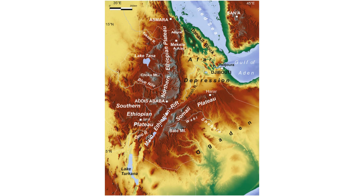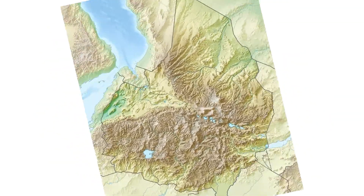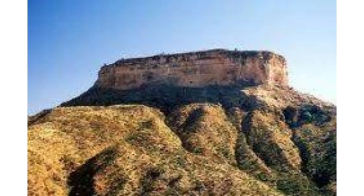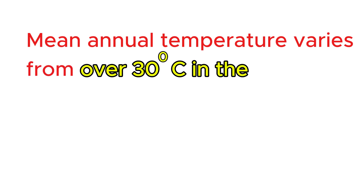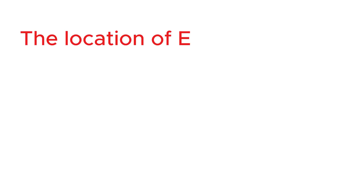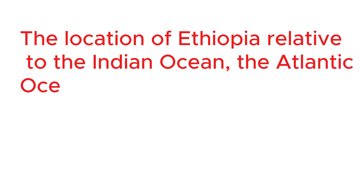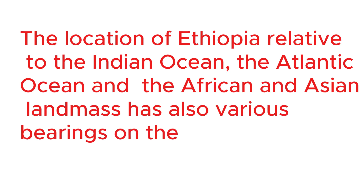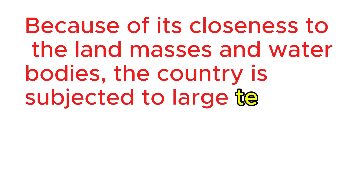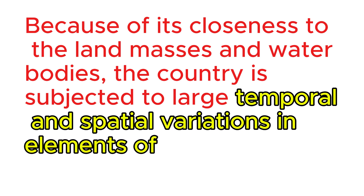Away from the peripheries, the land begins to rise gradually and considerably, culminating in peaks in various parts of the country. Thus, temperature, as affected by altitude, decreases towards the interior highlands. Mean annual temperature varies from over 30 degrees centigrade in the tropical lowlands to less than 10 degrees centigrade at very high altitudes. The location of Ethiopia relative to the Indian Ocean, the Atlantic Ocean, and the African and Asian landmasses also has various bearings on the climate. Because of its closeness to these landmasses and water bodies, the country is subjected to large temporal and spatial variation in the elements of weather and climate.